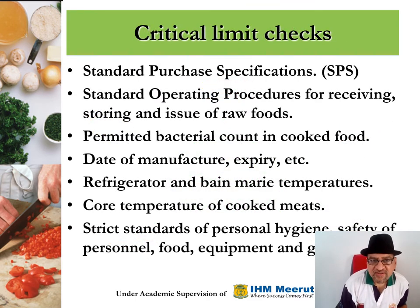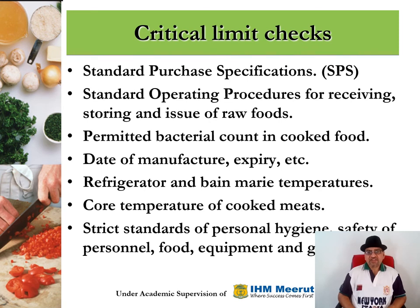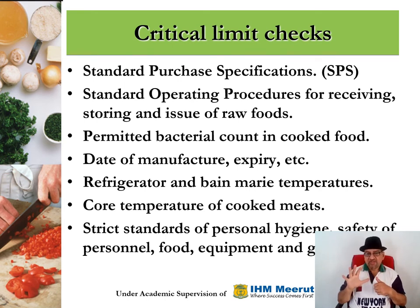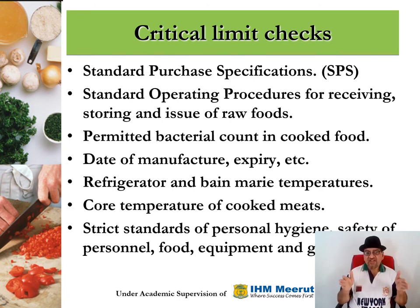Critical limit checks. The first is standard purchase specification (SPS). In standard purchase specification, the executive chef takes an SPS card and writes on it all the specifications related to the food. For example, for oranges: the oranges should be 5 per kg, the color should be orange, the acidity should be mild and not very sour, they should come packed in cartons of 5 kg each, and to maintain integrity they should be separated with straws.